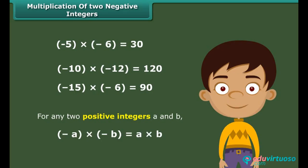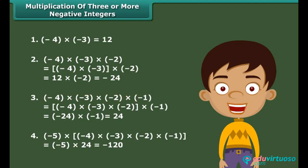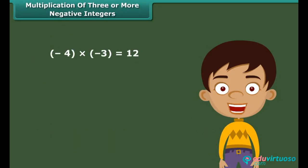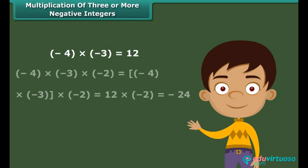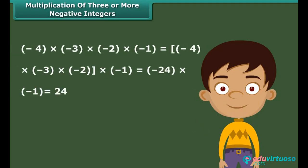In general, for any two positive integers A and B: (−A) times (−B) equals A times B. Observing examples: two negative integers multiplied give a positive result; three negative integers multiplied give a negative result; four negative integers give a positive result; and five negative integers give a negative result.